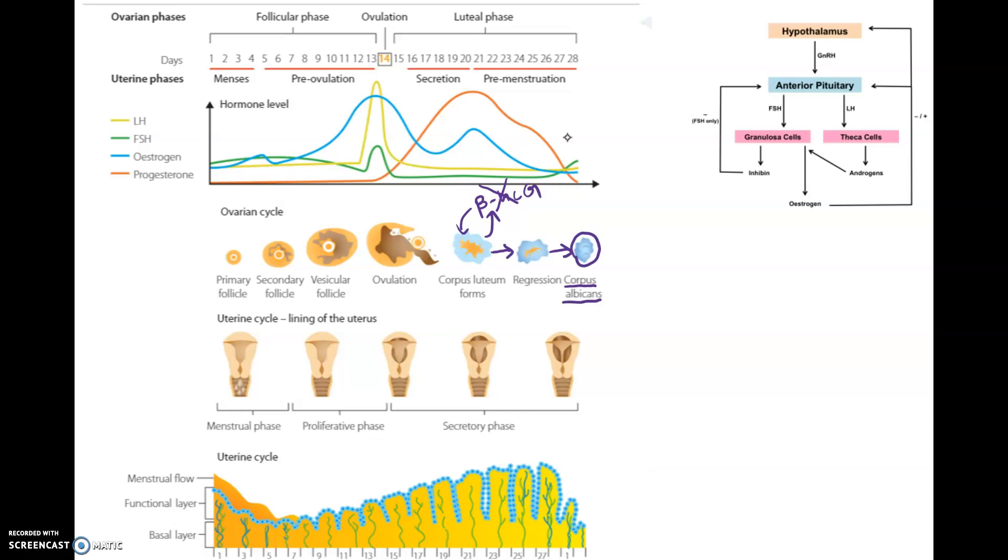You should also know the corpus luteum is responsible for the secretion of estrogen and progesterone. So in a normal reproductive cycle, where you have no implantation and thus no release of beta-HCG, you will have the corpus albicans forming, and hence a decrease in estrogen and a decrease in progesterone. That is simply because the corpus luteum releases estrogen and progesterone, and it can't when it's formed into a dark scar tissue known as a corpus albicans.